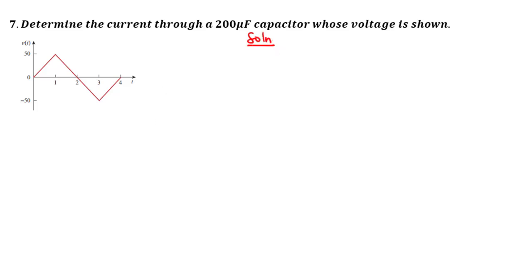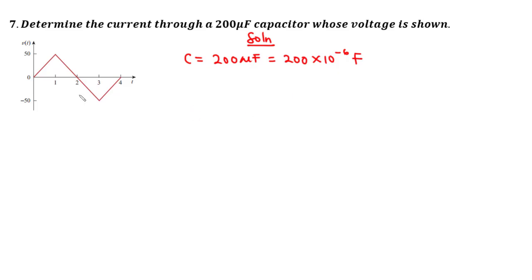From the question, we know the capacitance C equals 200 microfarad, that is 200 times 10 to the power of negative 6 farad. We will now consider each time interval, starting with 0 less than t less than 1.